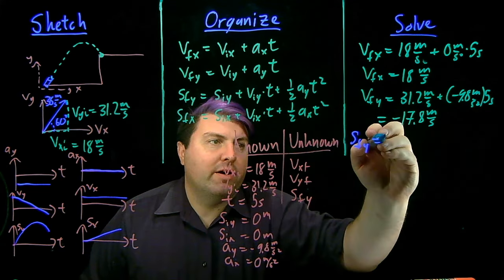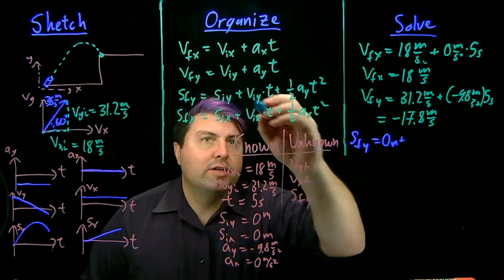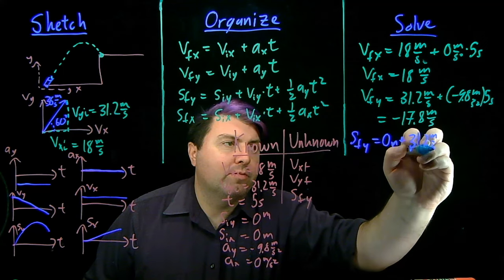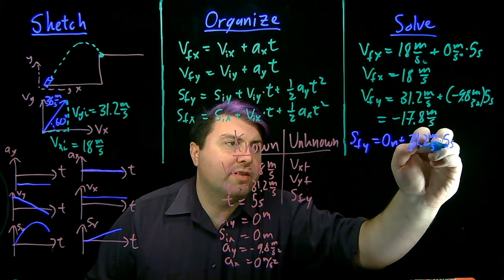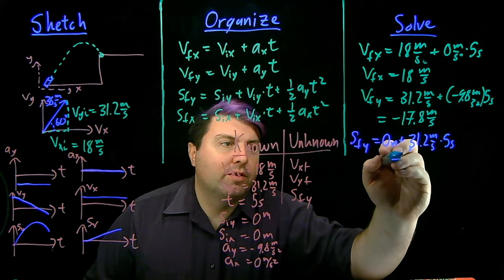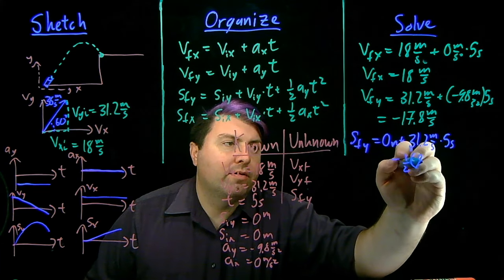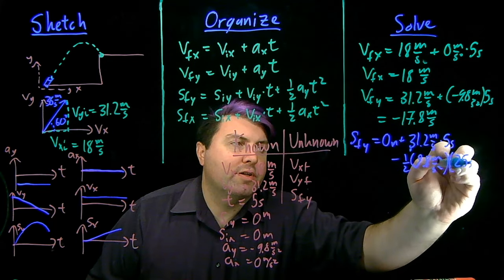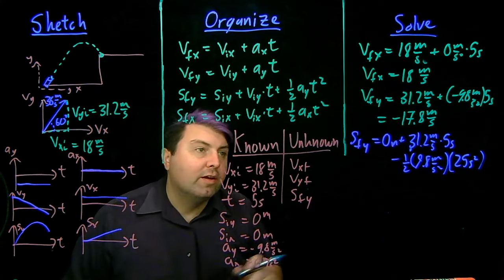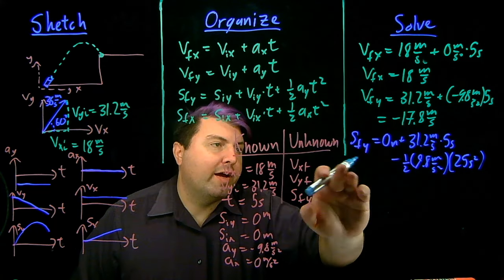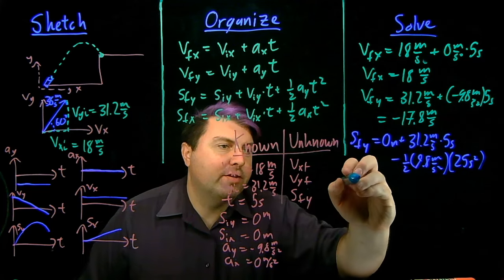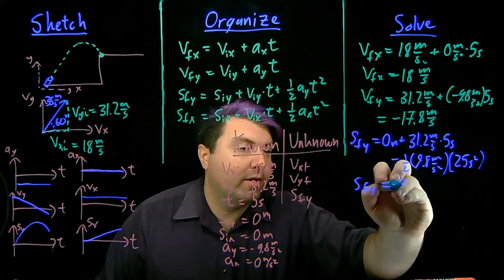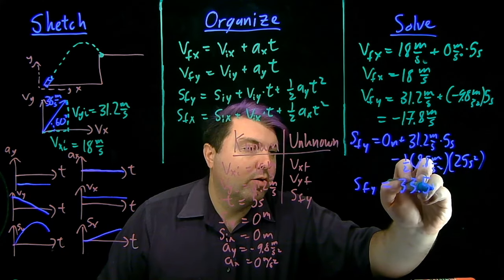So, for our final position on the y, we can use just equation two y. Sfy equals siy, which is zero meters, plus viy, which is 31.2 meters per second times five seconds minus one-half 9.8 meters per second squared times 25 seconds squared. So, feel free to pause this, but right, we have just our only unknown is here and just math left. Our final position on the y will then be 33.5 meters.